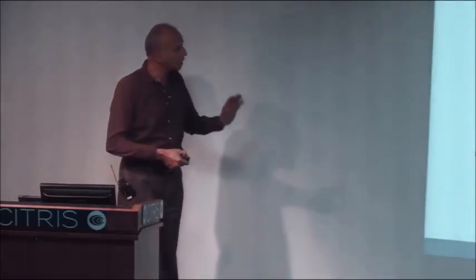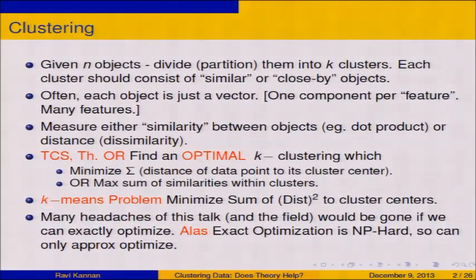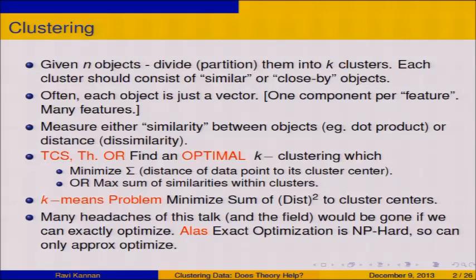It would have been wonderful if I could find the exact optimum — that would dispense with the need for this talk and lots of papers on the subject. But unfortunately, exact optimization is NP-hard. If you're not familiar with NP-hard, it's very unlikely that we would have an efficient algorithm — we don't have one now. It's very unlikely we would have one for solving this problem ever exactly. So we have to settle for approximate optimization, and that's going to create a lot of trouble for us.